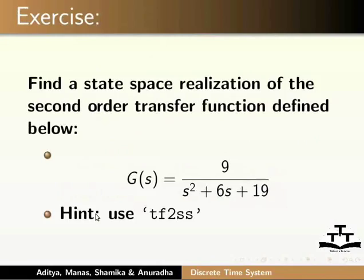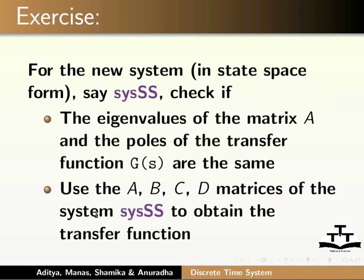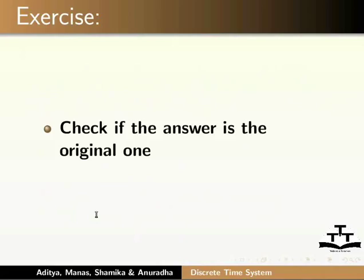Solve the following exercise: Find a state space realization of the second order transfer function defined below. Use the tf2ss command. For the new system in state space form — say sysss — check if the eigenvalues of matrix A and the poles of the transfer function g(s) are the same. Then use the A, B, C, D matrices of system sysss to obtain the transfer function and check if the answer is the original one.